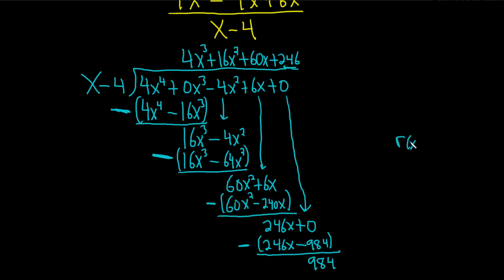So r(x) is equal to 984. That's called the remainder. And q(x), that's the quotient. Q(x) is all of this stuff here. So 4x cubed plus 16x squared plus 60x plus 246. That's what the question wanted, the quotient and the remainder.